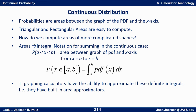For continuous distributions, probabilities are represented as areas between the graph — the PDF — and the x-axis. In the previous few videos we've been looking at rectangular areas from uniform distributions and triangular distributions, which gave us areas that either were rectangles or triangles. Those are pretty easy to do, which is why we chose those to study first — to get this idea of working with area using shapes we understand.